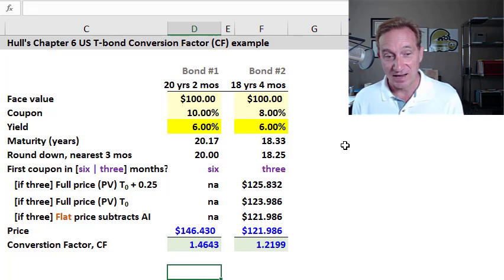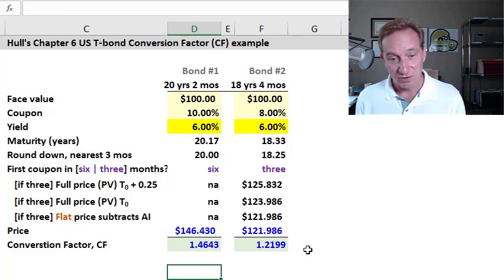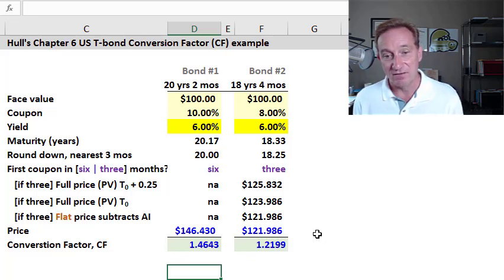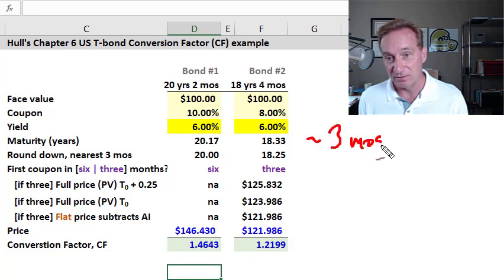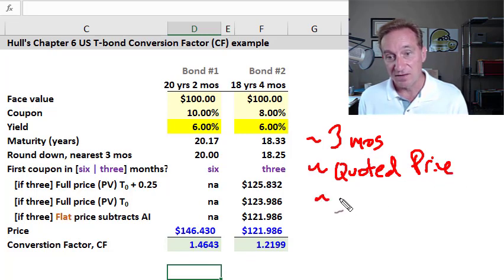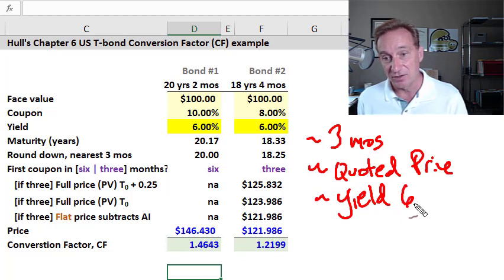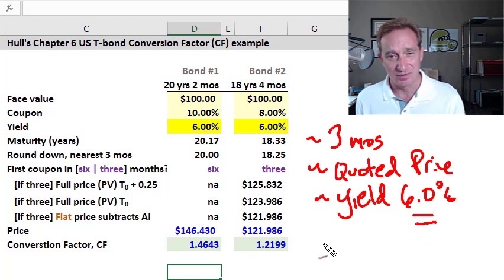However, the concept is actually simpler than it looks, and that is that the conversion factor is set equal to the quoted price the bond would have per dollar of principal on the assumption that the interest rate for all maturities equals 6% per annum. So that's the simple rule. I think of it as just having three parts. The first step is rounding down to three months on the maturity, and then we're looking for the quoted price of the bond if we assume that we have a flat yield curve at 6%. So all these rules do is round the bond maturity down to three months and obtain the quoted price, not the cash price, assuming a flat yield curve of 6%.